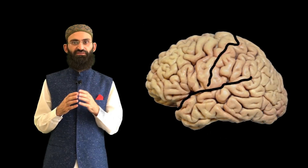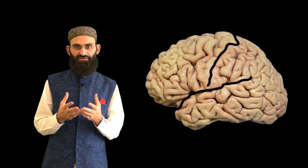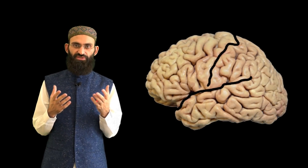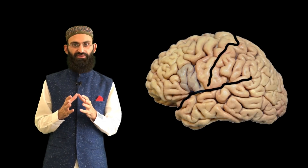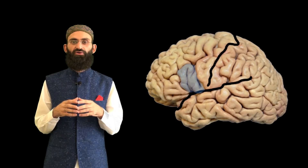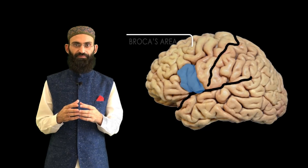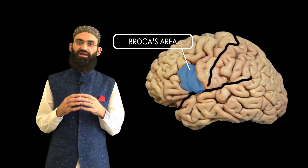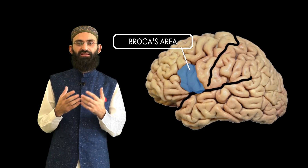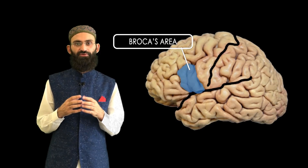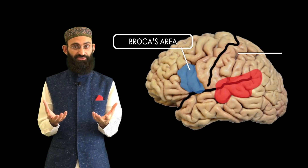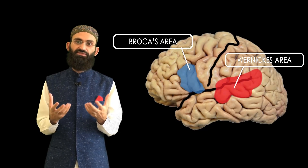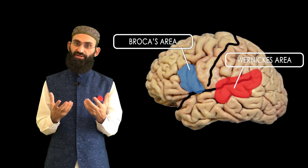On the lateral surface of the dominant frontal lobe — the left frontal lobe in most individuals — there is an area called Broca's area, or motor speech area. Another area at the junction of the parietal and temporal lobes is concerned with the analysis of sensory input related to speech, and this is called Wernicke's area.